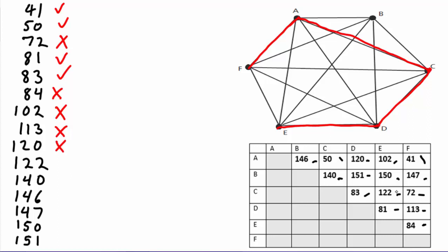Now at 122, that corresponds to the edge CE, and CE would give us a circuit. So we don't want that. Now with 140, we'd have the edge BC, and we can see that that would not give us a circuit. So we can choose that edge.